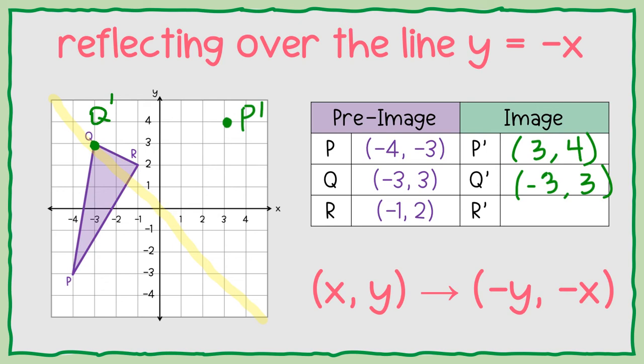And last but not least, let's try to find where r prime should be. The negative 1 and the 2 switch places, but then you change their sign. So this will be negative 2, positive 1.